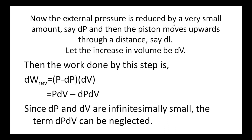Now the external pressure is reduced by a very small amount, say dP. Then the piston moves upward through a distance, say dl. Let the increase in the volume be dV. Because while decrease in pressure, the volume of the gas increases, there is a change in volume to dV. Then the work done by this small step is given by dW reversible, which is equal to the decrease in pressure times the change in volume. Decrease in pressure is given by P minus dP, and change in volume is given by dV. So by multiplying we get PdV minus dP·dV. Since dP and dV are both very small values, the term dP·dV is neglected.